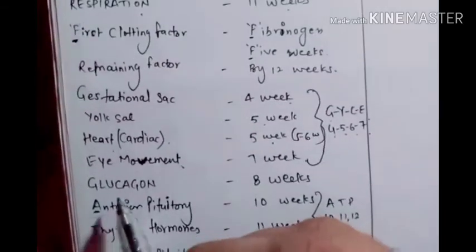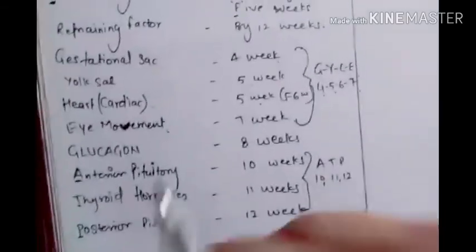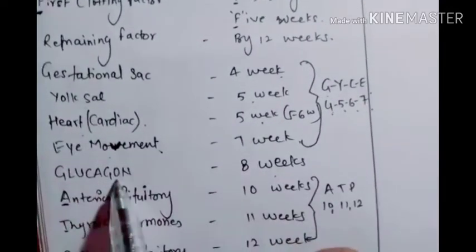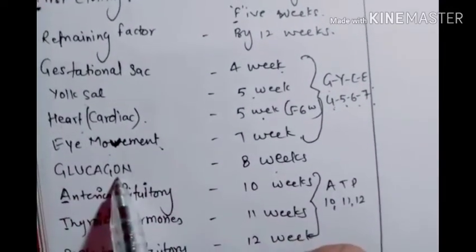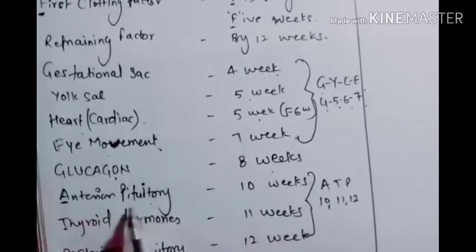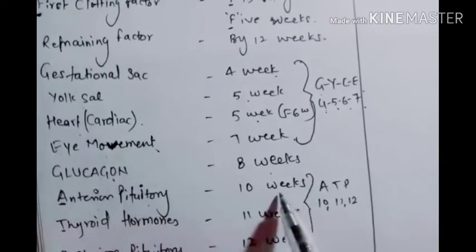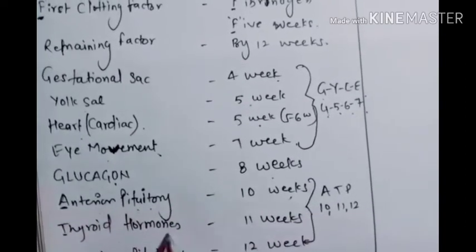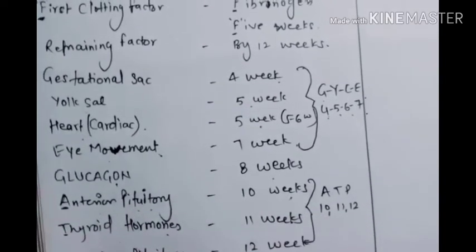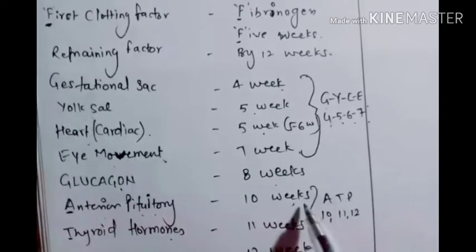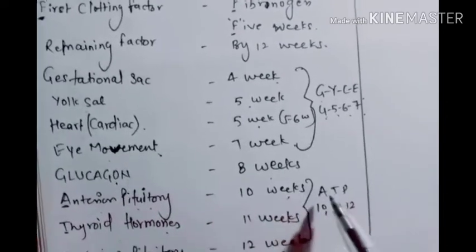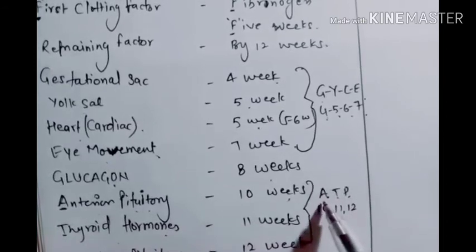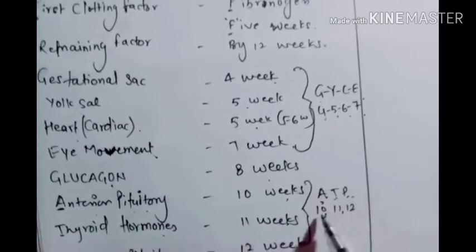Glucagon starts forming at eight weeks — count the letters to confirm. Anterior pituitary develops at 10 weeks, thyroid hormone at 11 weeks, and posterior pituitary at 12 weeks. Remember this using the biochemistry mnemonic ATP — A for anterior pituitary (10), T for thyroid hormone (11), P for posterior pituitary (12).